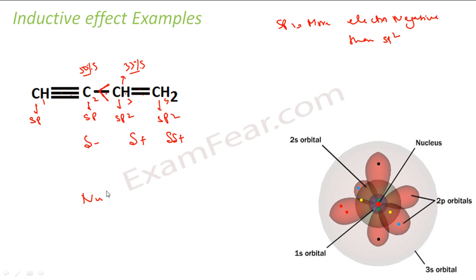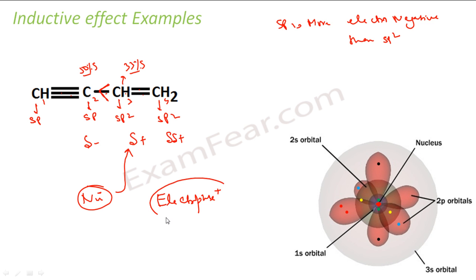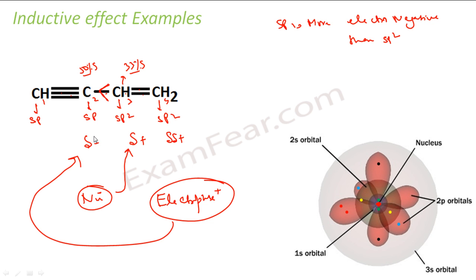If a nucleophile is supposed to attack — a nucleophile is one which loves the nucleus and has negative charge — it will generally attack the position with slight positive charge. If an electrophile attacks — one which loves electrons and has positive charge — it can generally attack the position with slight negative charge. So carbon 2 is hogging the electrons and getting slightly negative charge, while carbon 3 gets a slightly positive charge.